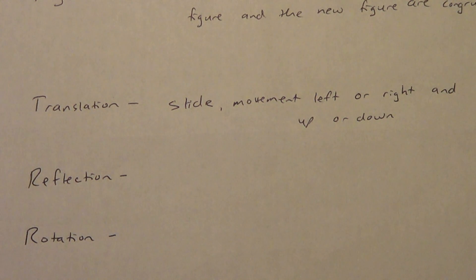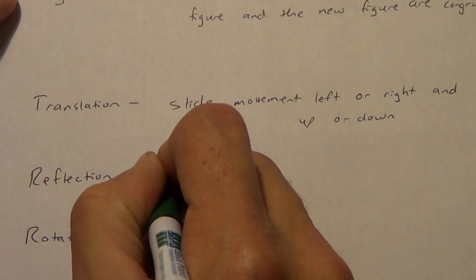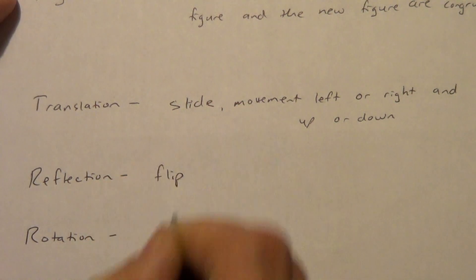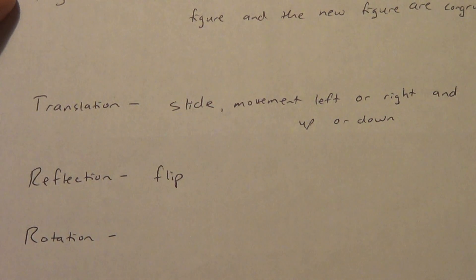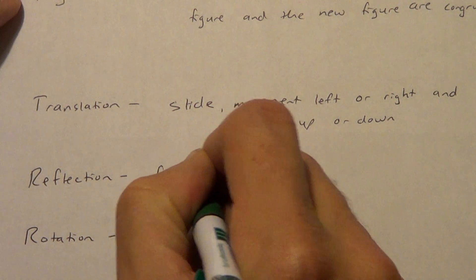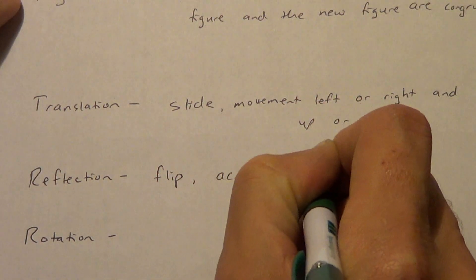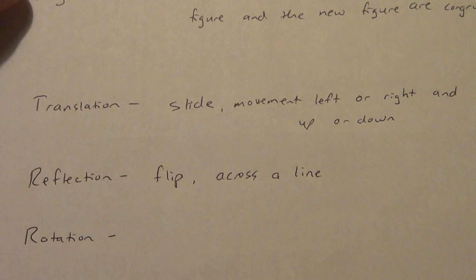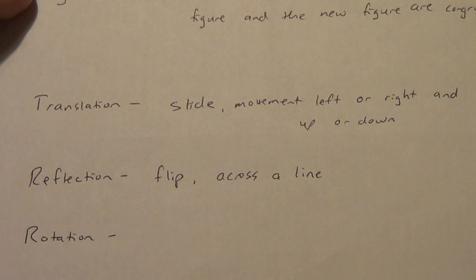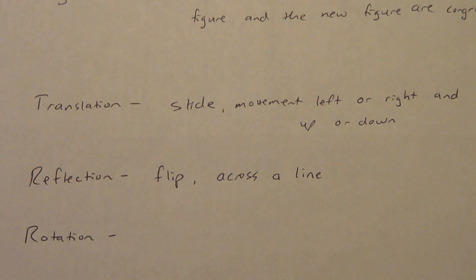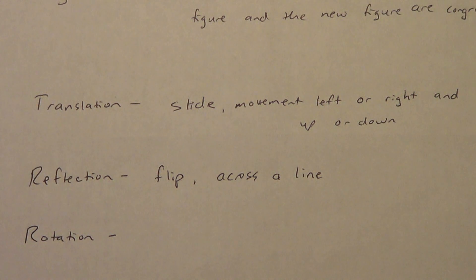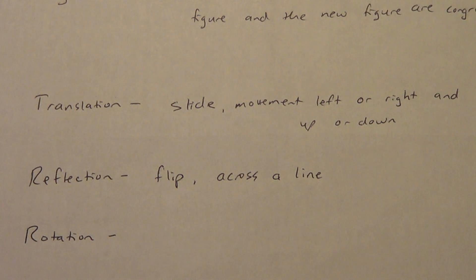A reflection is more the idea of a flip. We take something and flip it across a line. When we reflect something, we always reflect it across a line. We're going to be doing this on a graphing plane later — so we might have a line like y equals 4, or the x-axis, or something like that.